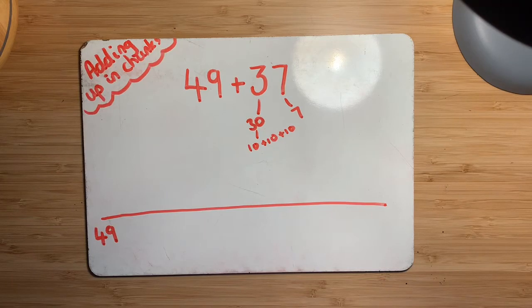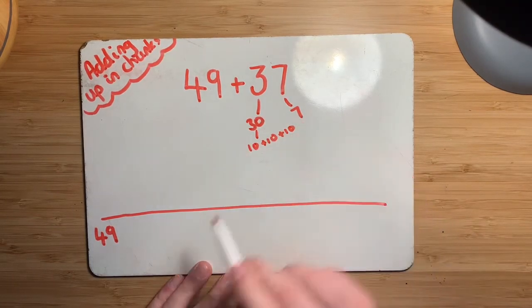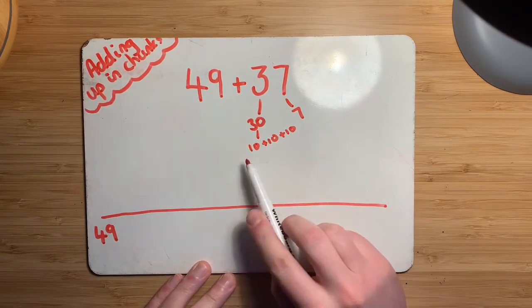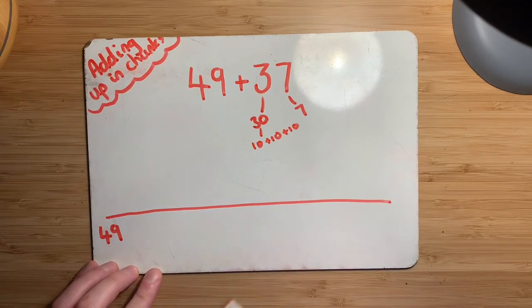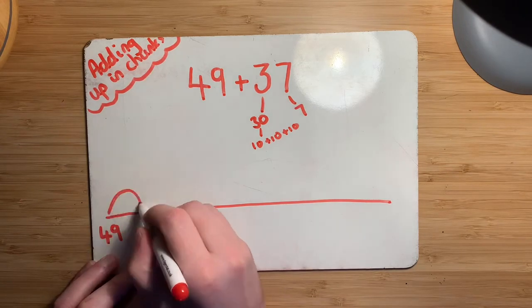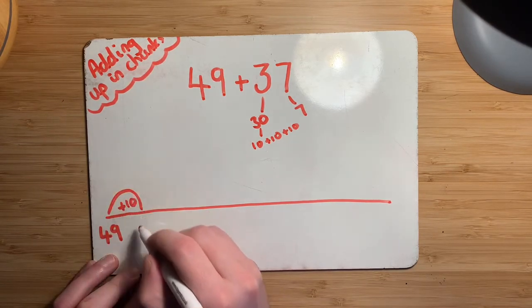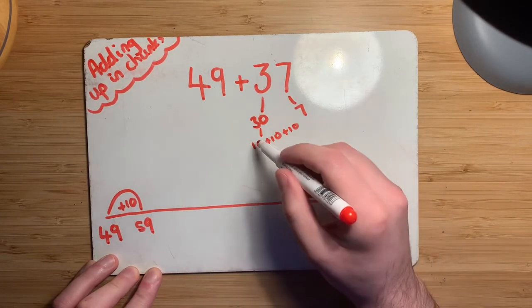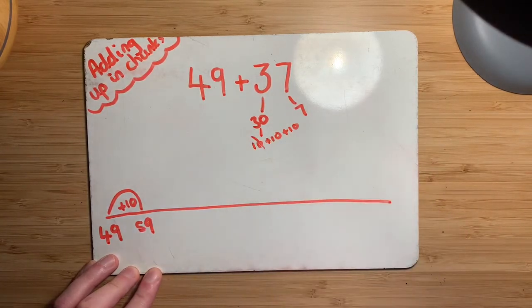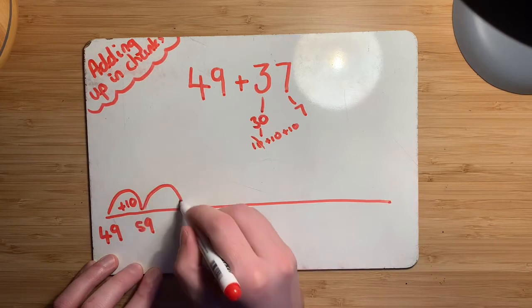And now all we need to do now is add the chunks on that we've made. So I'm going to go with these chunks that I've made here. So a 10, 10, 10 and a seven. So that should make it nice and easy hopefully. So all you would do is you would just start adding the chunks on now. So I'll add on one 10, which would take me up to 59. And each time when I've done one chunk, I like to cross them out just to remind myself that I've already done that one and you might want to do the same.